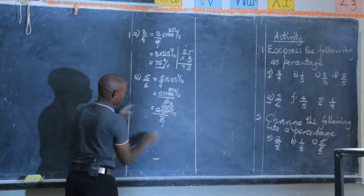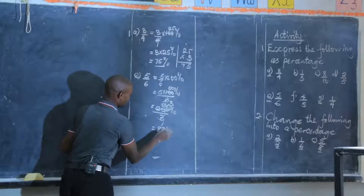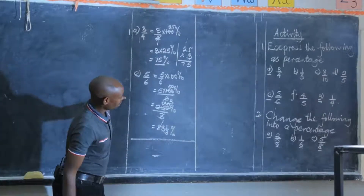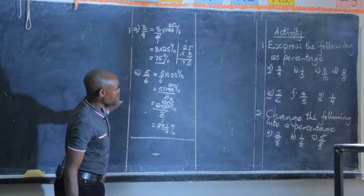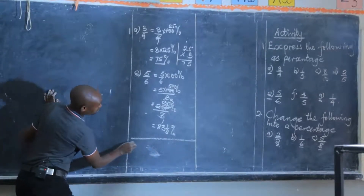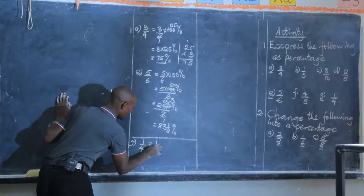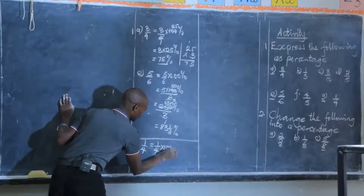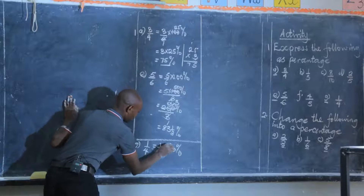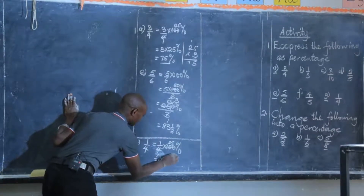Number four: 1 out of 4. So 1/4 multiplied by 100%. 100 divided by 4 is 25, so we have 1 times 25 percent, which gives you 25 percent.